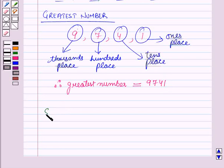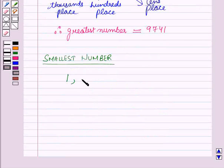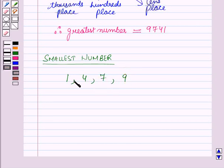Now let us form the smallest number by using these 4 digits such that none of the digits is repeated. Among these 4 digits, the least digit is 1, then the next least digit is 4, then 7, and the last is 9. For finding the smallest number using these 4 digits such that none of the digits is repeated,